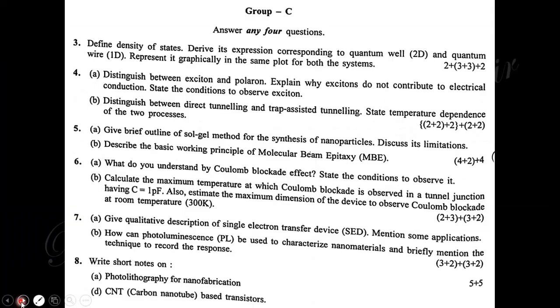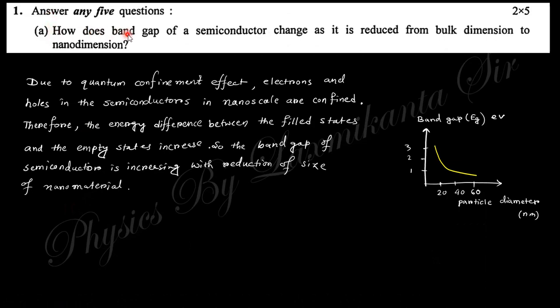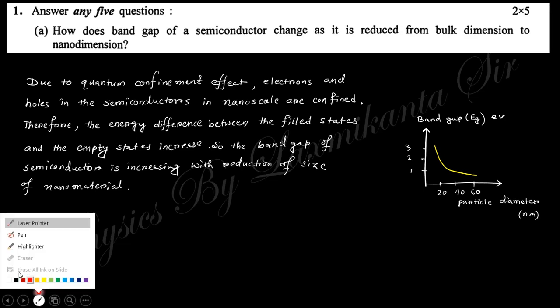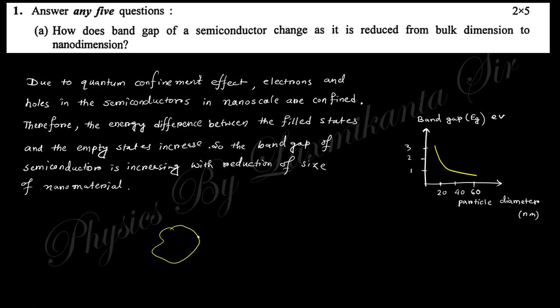So let's start. The first question says how does the band gap of a semiconductor change as it is reduced from bulk dimension to nanometer dimension? When a bulk material transforms into nanomaterials, what is the change in the band gap?